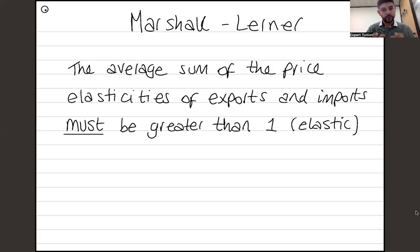Now we still say that in theme four. However, we basically will evaluate and say, well, actually this depends on the Marshall-Lerner condition being satisfied. So let's begin by defining what this is. So I've written out for you guys, which is this. It says the average sum of the price elasticities of exports and imports must be greater than one, which hopefully you know from theme one means it's elastic. In other words, we need our exports and our imports to be elastic for the current account to actually get better when the currency depreciates.